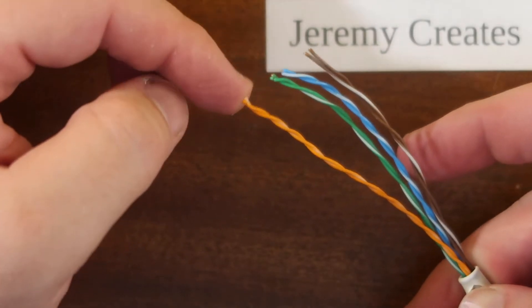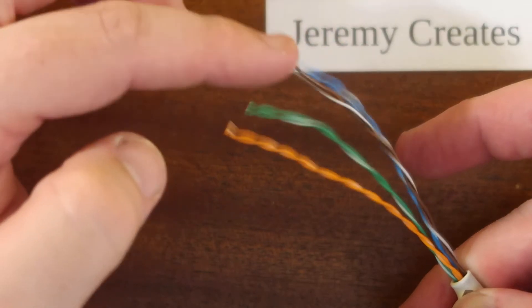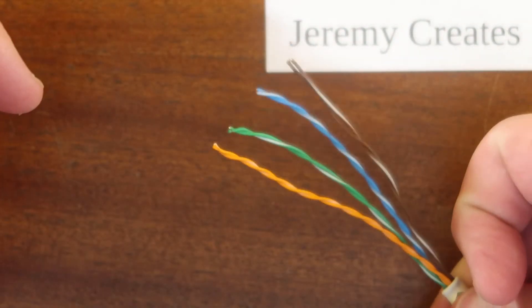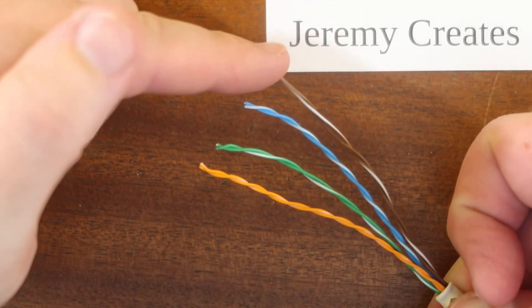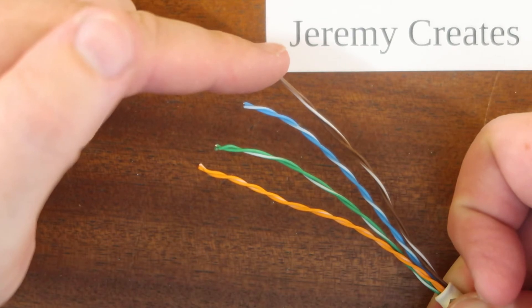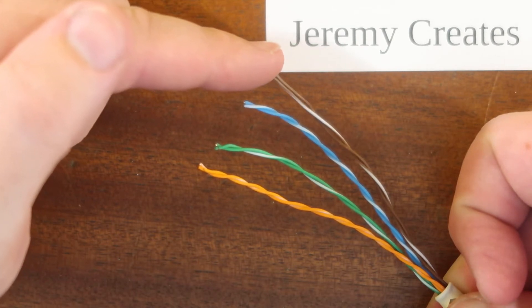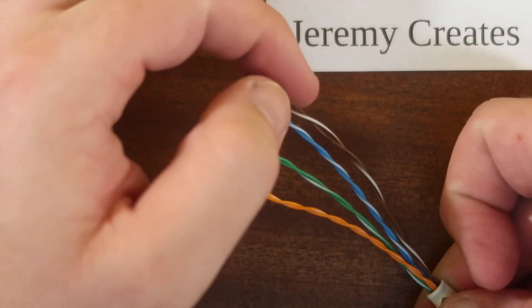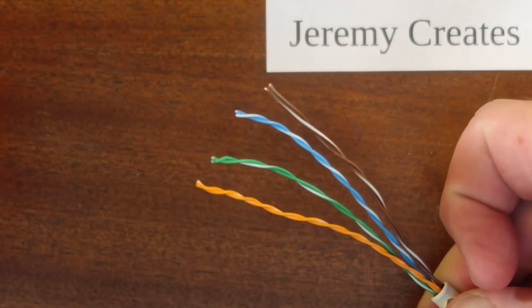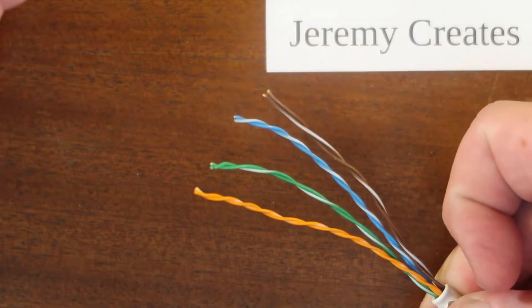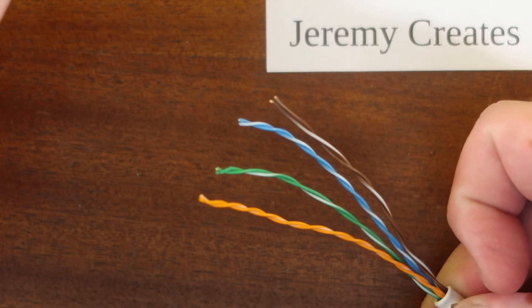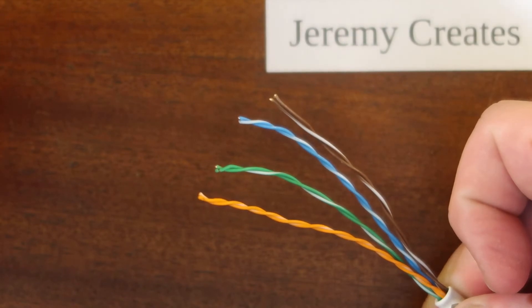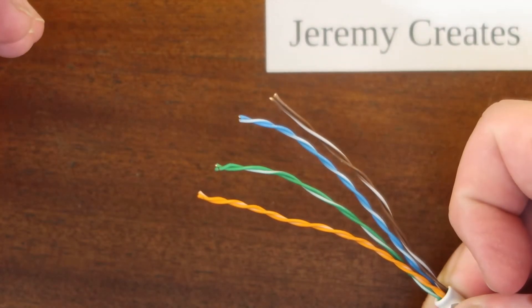Inside you've got four lots of twisted pair. The reason they are twisted is to reduce the interference and through this type of cable you get around about a gigabit per second speed which is more than enough for anything you're likely to be doing at home for most people because what's the speed of your internet connection and it'll be a tenth of that if that.